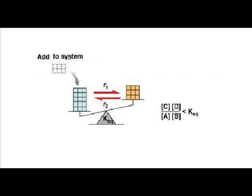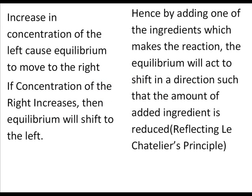An increase in the concentration on the left will cause the equilibrium to move to the right. If concentration of the right increases, then equilibrium will shift to the left. Hence, by adding one of the ingredients which makes the reaction, the equilibrium will act to shift in a direction such that the amount of added ingredient is reduced, reflecting Le Chatelier's principle.